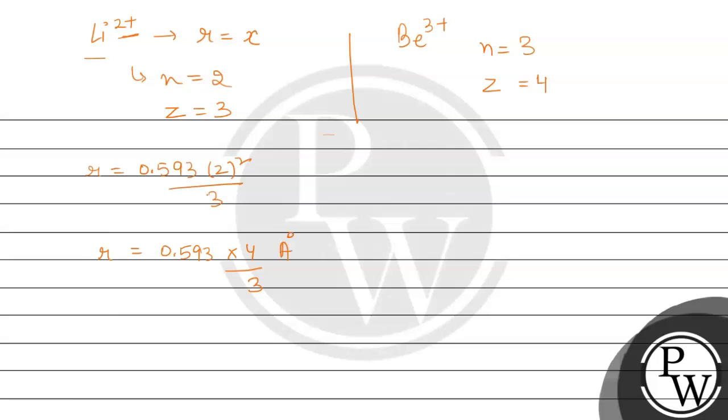And the same way we will check for beryllium. Here we will write this as r1 and for beryllium we'll use r2. So 0.593 multiplied by z², which is 4², and n value is... z value is